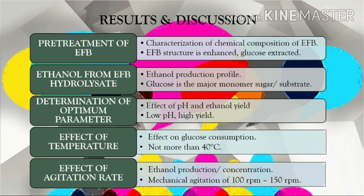Lastly is the effect of agitation rate. As can be clearly seen from the graph, at the agitation rate of 150 rpm we obtain a maximum amount of ethanol. It can be said that fermentation works better at a higher agitation rate because it produces more concentration of ethanol, so it is better to use a higher agitation rate.